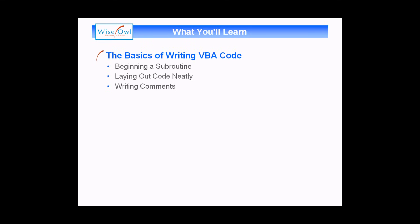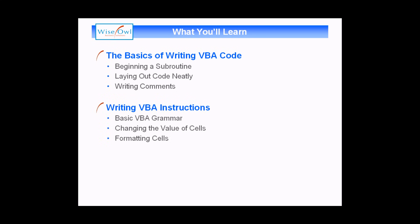We'll teach you how you can begin writing a subroutine or a program. We'll give you some good practice guidelines for making sure your code is laid out neatly and how you can add comments to your code to explain what's going on. Once we've dealt with the absolute basics we'll move on and show you a couple of practical things — how to write an instruction in VBA to tell Excel to do something, the basic grammar of a VBA sentence, and how you can change the values and formatting of cells.